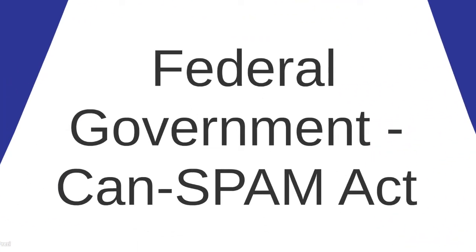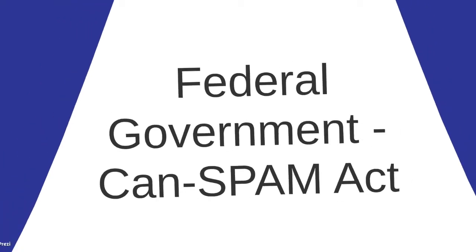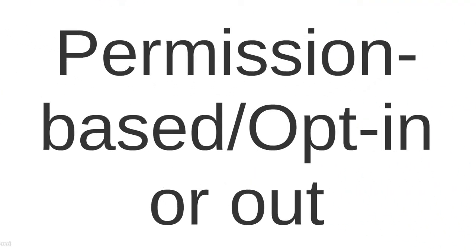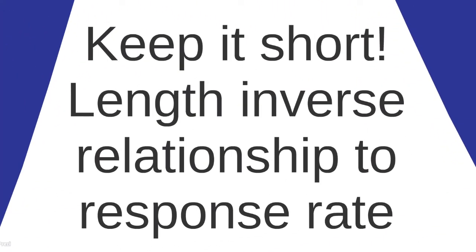Rules regarding email are the strictest. Enforced by the Federal Trade Commission, the CAN-SPAM regulations lay out what you must include in your email to avoid steep fines. One of the most important components of CAN-SPAM is the ability to opt out of receiving promotional emails. As an added layer, setting up an opt-in option for subscribers ensures they are interested in receiving your email marketing. While using images in an email promotion is not required by law, it is important to a successful campaign — including a corresponding image will increase its success. Research has shown that the length of the email has an inverse relationship to customer response: the longer the email, the lower the response rate.